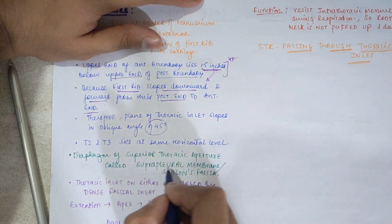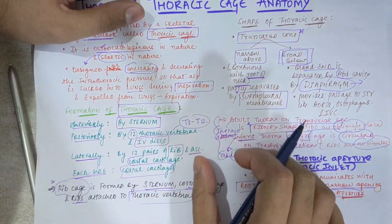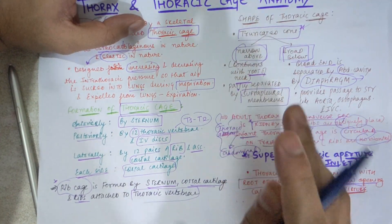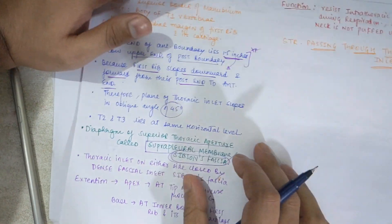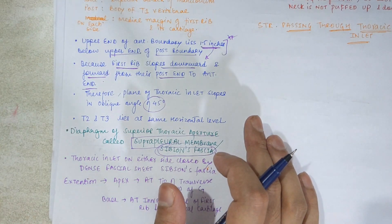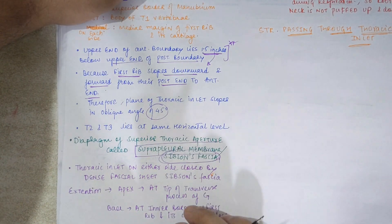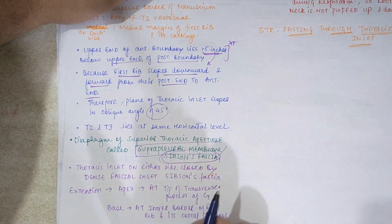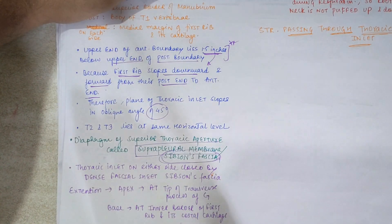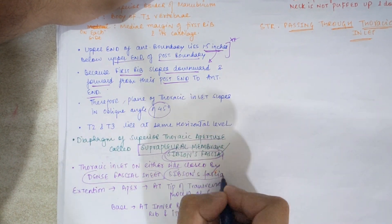The diaphragm of the superior thoracic aperture is called the suprapleural membrane, also known as Sibson's fascia. It separates the narrow upper part of the thoracic inlet. This Sibson's fascia is actually the tendinous part of the scalene minimus muscle. It closes the thoracic inlet on the upper side with a dense fascial sheet called Sibson's fascia.